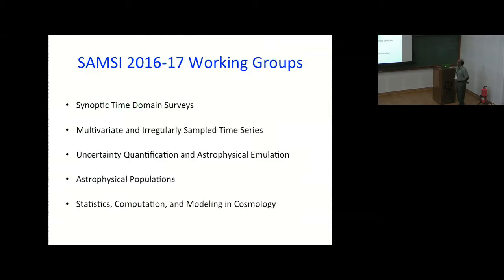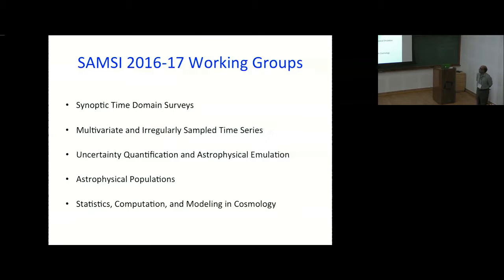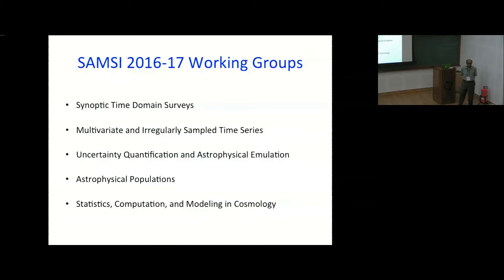Among the working groups, we started with quite a few — some are active, some are not as active. One of the biggest is the time domain synoptic surveys group. Others include multivariate irregularly sampled time series, which are helpful for gravitational waves; uncertainty quantification and astrophysical emulation; astrophysical population, where they discuss exoplanets and related topics; and statistics and computation for cosmology.